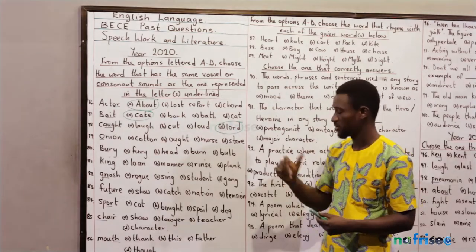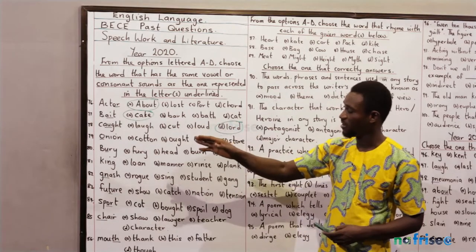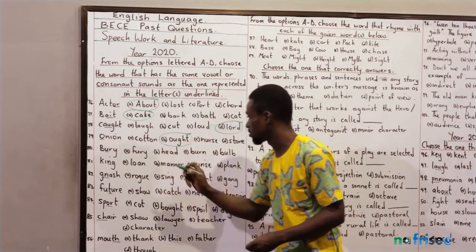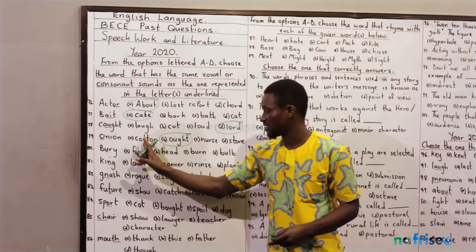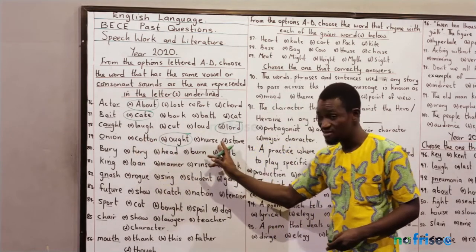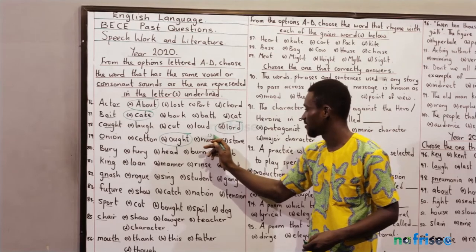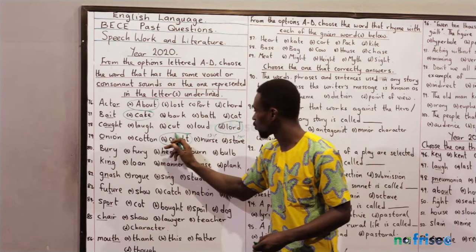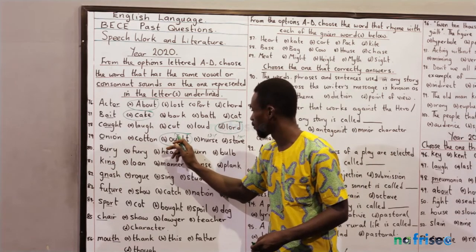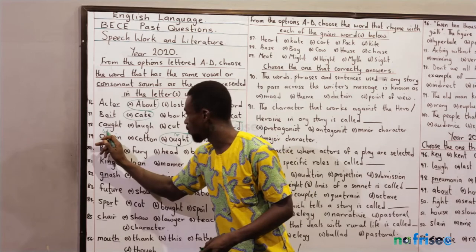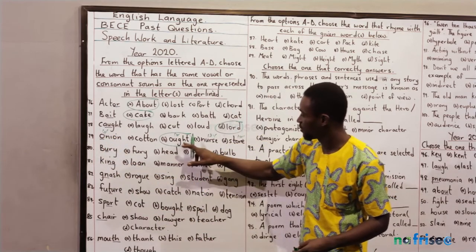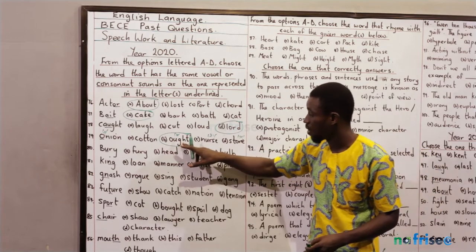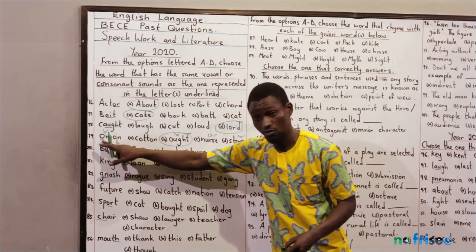Number 79 — 'onion.' Which option has the same short /ɒ/ sound? That's option B — 'ought.' Option A, 'cutting,' is a different sound. Option B, 'nurse,' has the /ɜː/ sound. Option D, 'tall,' has the long /ɔː/ sound. 'Onion' and 'ought' are both short — not long — so 'ought' is the correct match.